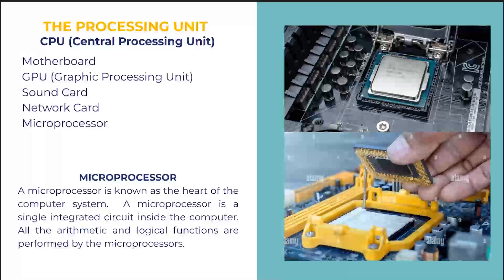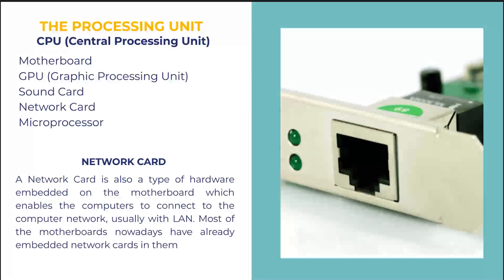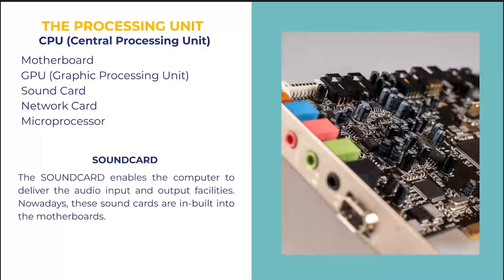Next we have the microprocessor. The most popular microprocessor company is Intel — they make the best processors. From what I hear, the fastest processor is the Core i9, though there may be newer ones. This is actually the true brain of the computer. You can see one on this motherboard here, and another about to be fixed onto a motherboard. This is what does the actual processing. The network card and sound card do other smaller tasks — handling data flow and sound respectively.